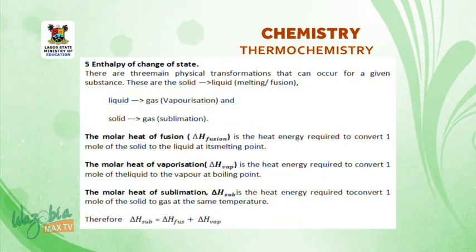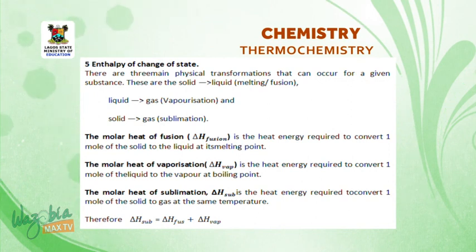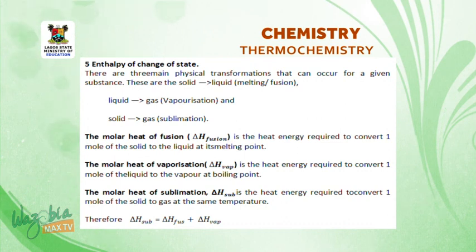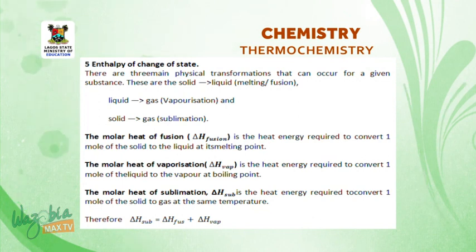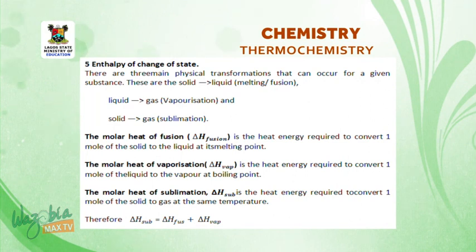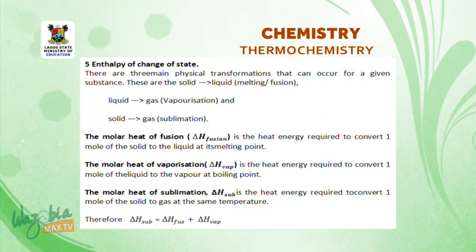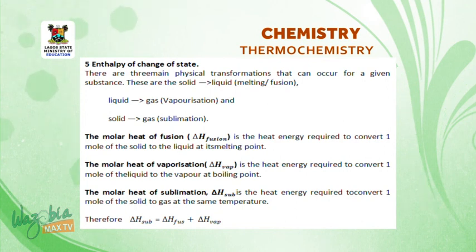Number five: enthalpy of change of state. There are three main physical transformations that can occur for a given substance. These are: solid to liquid, which is melting or fusion; liquid to gas, vaporization; and solid to gas, sublimation. The molar heat of fusion is the heat energy required to convert one mole of the solid to the liquid at melting point. The molar heat of vaporization is the heat energy required to convert one mole of the liquid to the vapor at boiling point. The molar heat of sublimation is the heat energy required to convert one mole of the solid to gas at the same temperature. Therefore, delta H of sublimation equals delta H of fusion plus delta H of vaporization.